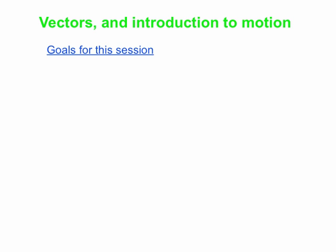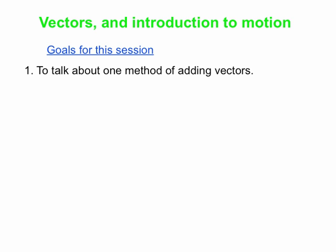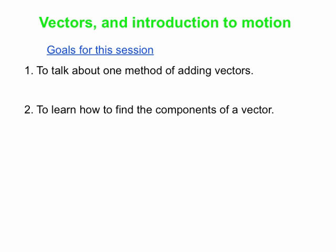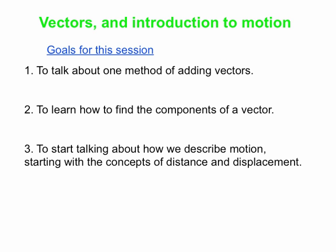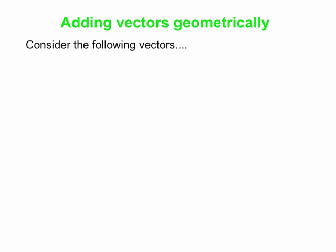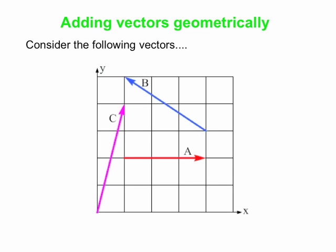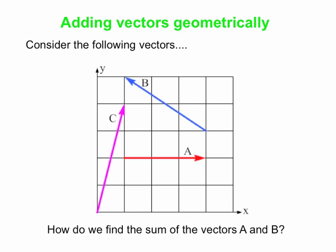In this session we are going to talk about vectors, one method of adding vectors, and how to find components of a vector specifically in two dimensions. We will also scratch the surface on motion, starting with distance and displacement. We have three vectors shown in a picture with a two-dimensional XY coordinate system — vector a, vector b, and vector c. We'll focus on a and b for now.